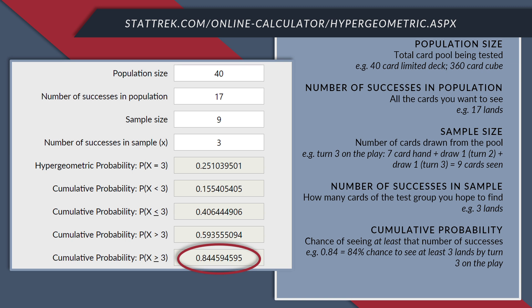Sample size is the number of cards we hypothetically draw from our deck. If we are interested in how many lands we've drawn by turn 3 on the play — ignoring mulligans — we will have drawn 7 cards for our opening hand, plus a card on turn 2 and a final card on turn 3, so our sample size is 9. Number of successes is 3. We press calculate, and the bottom number is 0.84 — meaning an 84% chance to see 3 or more lands by turn 3 on the play with 17 lands.